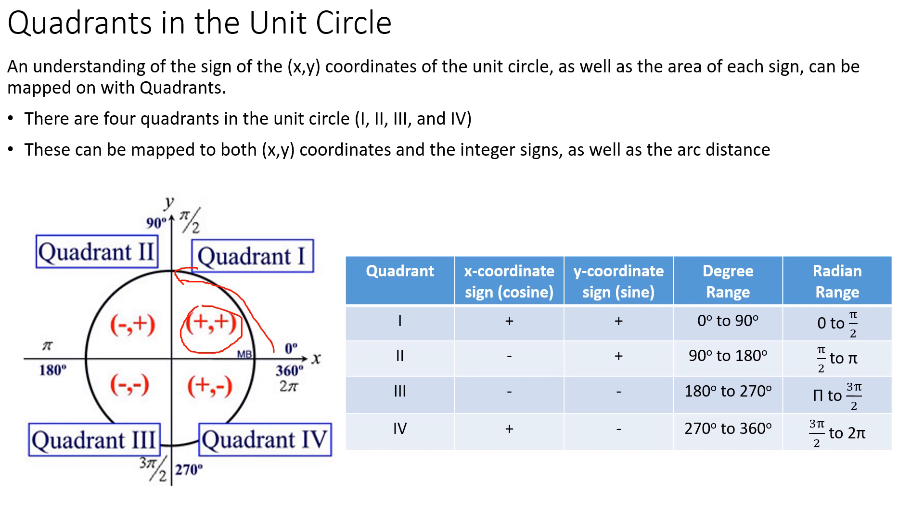And that goes from π/2 to π, from 90 degrees to 180 degrees. Then from π to 3π/2, another half a π, that goes from 180 to 270 degrees. And that has to have both negative sine and cosine, negative x, negative y. That's quadrant three. And then finally in quadrant four, we've got positive x, positive cosine, negative sine, or negative y. And that goes from 270 degrees to 360 degrees, and from 3π/2 to 2π.